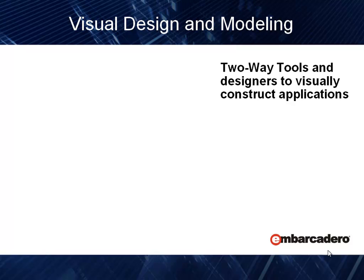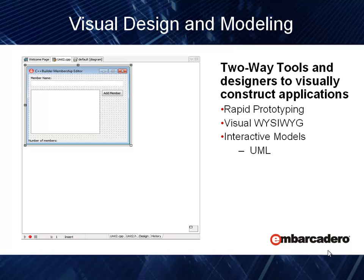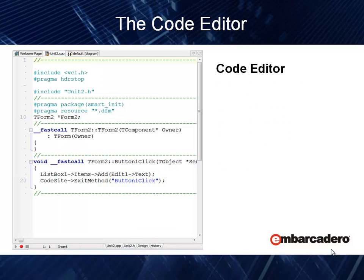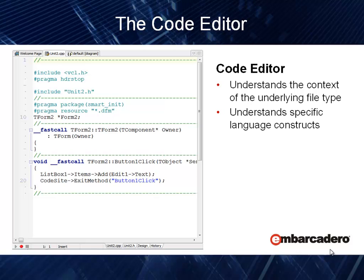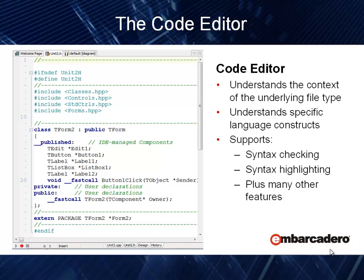The design surface is really a two-way tool that allows us to visually construct applications. It provides a great GUI builder for rapid prototyping and visual what-you-see-is-what-you-get design. It also has interactive models like UML, which allows us to build models that generate code, giving us extreme visualization. The code editor understands the context of the underlying file type and specific language constructs, whether XML or C++, and brings advanced features like syntax highlighting, syntax checking, and many more.